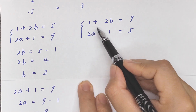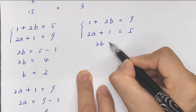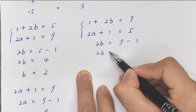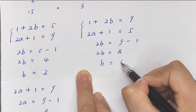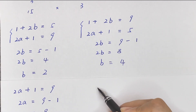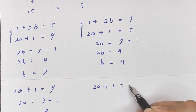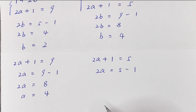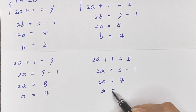For the second case: 1 + 2b = 9, so 2b = 8, giving b = 4. And 2a + 1 = 5, so 2a = 4, giving a = 2.